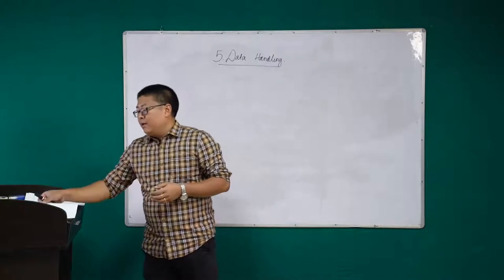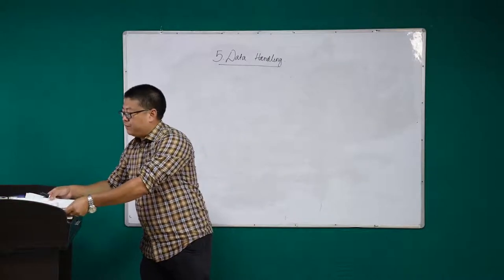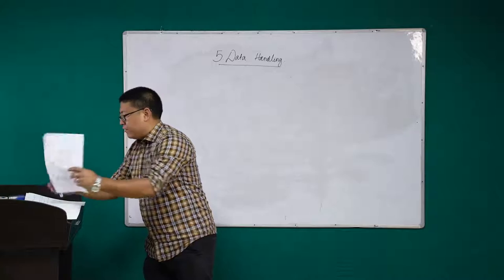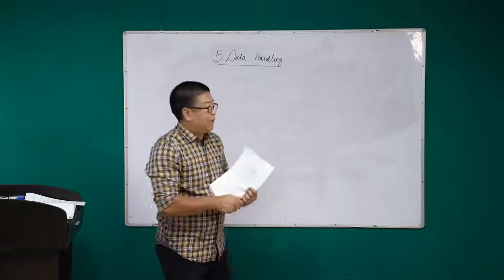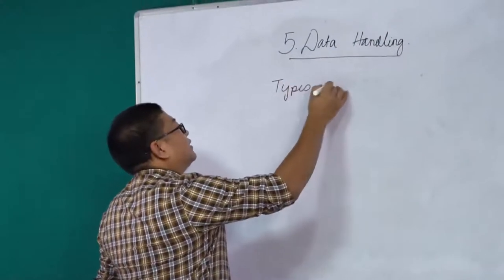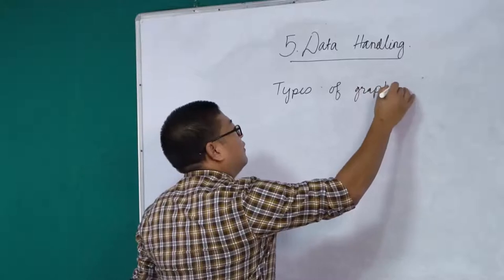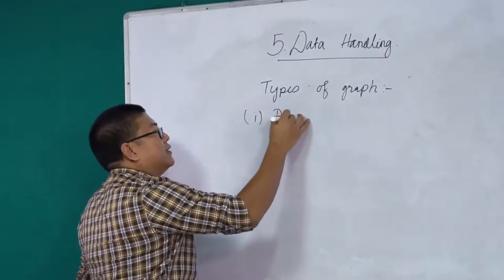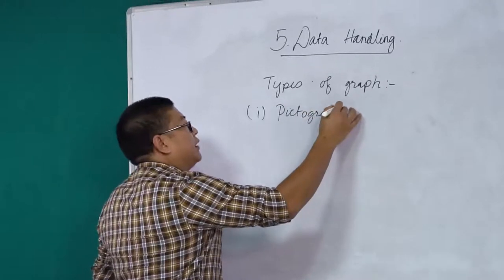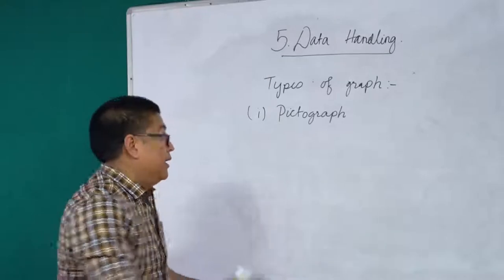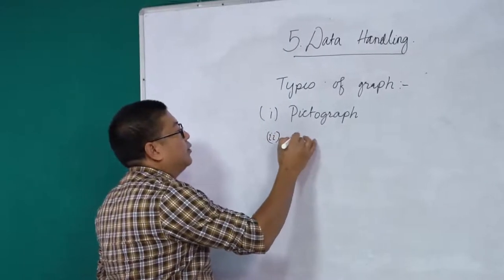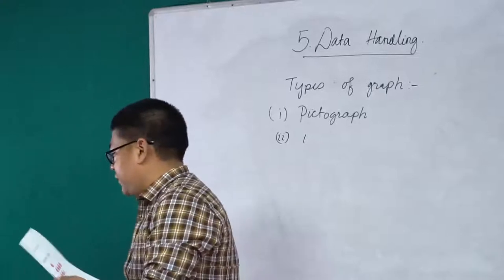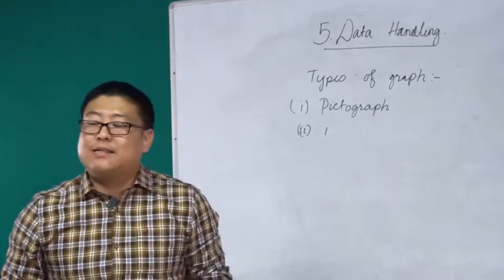Before we go into that, we will look at some types of graphs that we have studied and will be studying here on. The first type of graph is called a pictograph. Before we go further, let me show you what a pictograph actually is. We have done this in Class 7, so I hope you will recollect. If not, you can go back and look at your textbooks and notebooks from the last academic session.